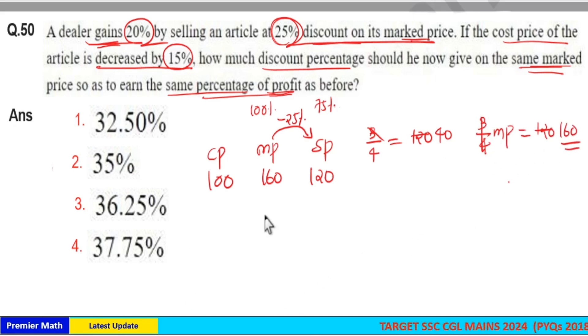Now cost price decreased by 15% in the second case. So in the second case cost price is 100 minus 15, 85 rupees. And mark price should be the same, that is 160 rupees. And also profit is also same.